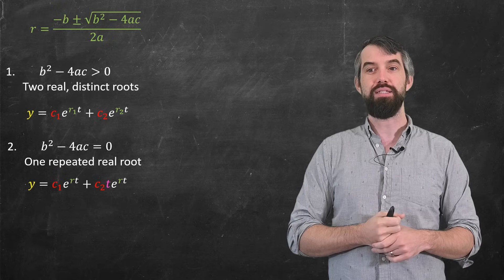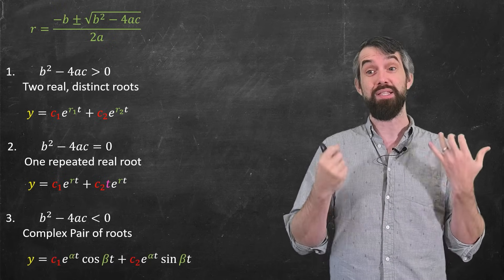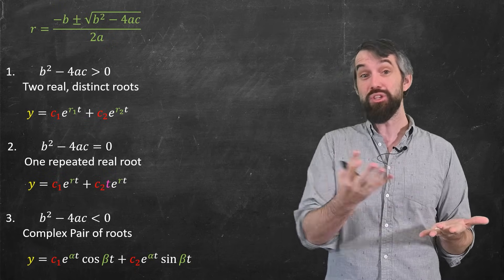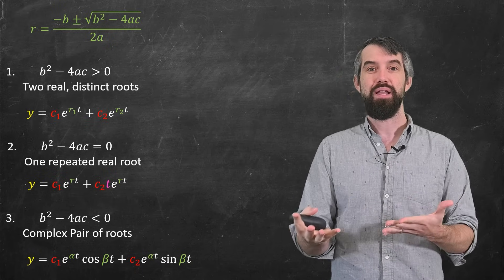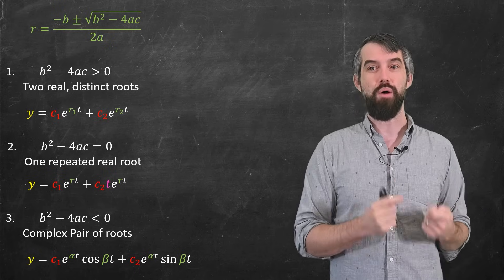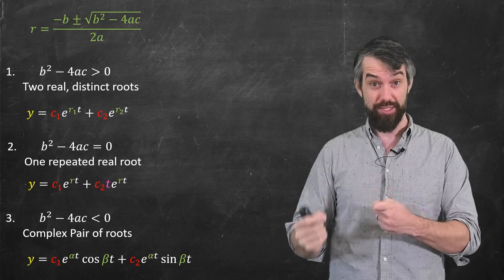And then the third possibility is that the thing under the square root is negative. That means your roots are complex. They're like an alpha plus or minus an i beta. In that case, the thing that you guess is a combination of exponentials and cosine and exponentials and sine.